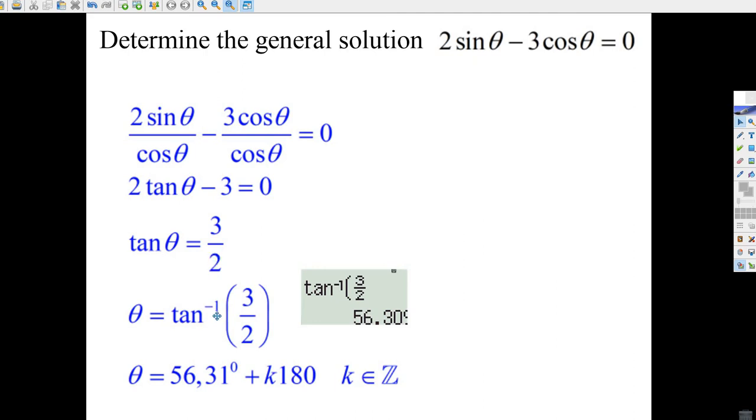Well, you're supposed to find a general solution, but you've got to find one solution first. So you go shift tan of 3 over 2. Your calculator tells you it's 56.3. That's a 9 there. So 56.31 degrees. That's one answer.